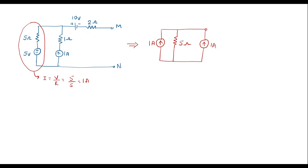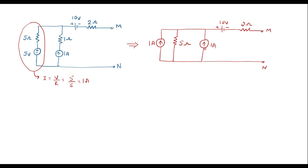So now let me connect a current source of magnitude 1 amp. This will be connected as it is, along with plus/minus 10 volt source and the 2 ohm resistor. This is M and this is N. Now we can see that two 1 amp current sources are in parallel and in the same direction, so I can replace these two current sources with a single current source of magnitude 2 amp.